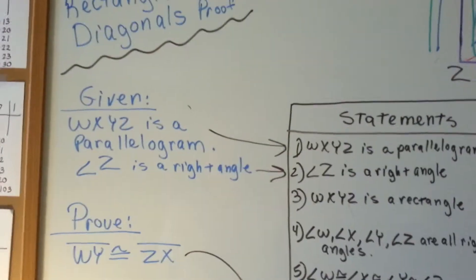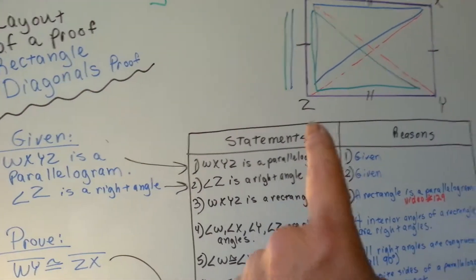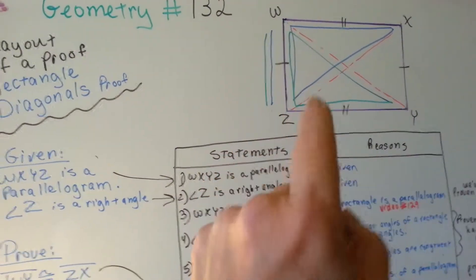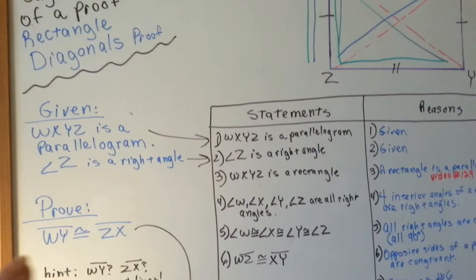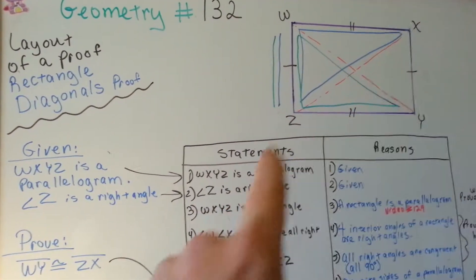So, our given is that WXYZ is a parallelogram, and that angle Z is a right angle, right here. So, it's a parallelogram, and that's a right angle. And we need to prove that this one is congruent to this one.